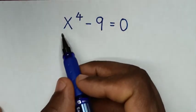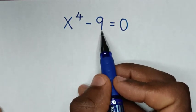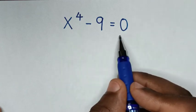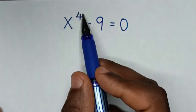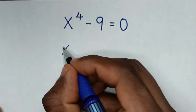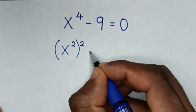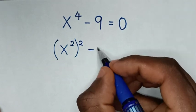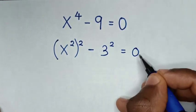Hello. How to solve x to the power 4 minus 9 is equal to 0, to find the values of x from this equation. So first we reduce this power 4 into a square, so it will be x squared, bracket squared, then minus 9 is the same as 3 squared, is equal to 0.